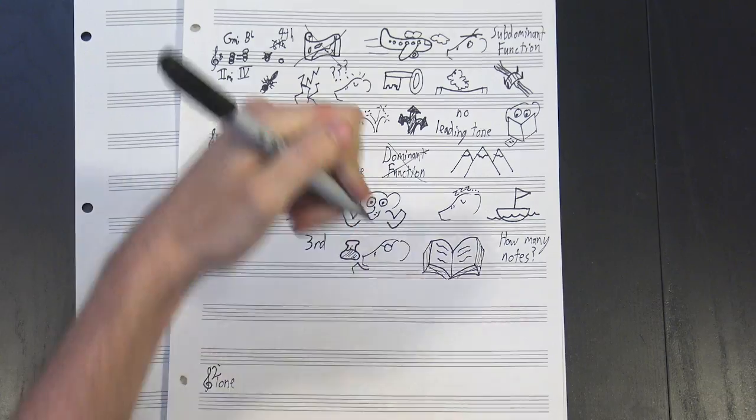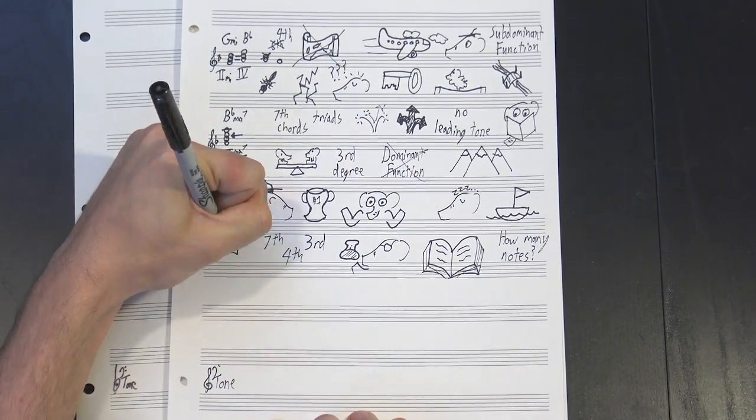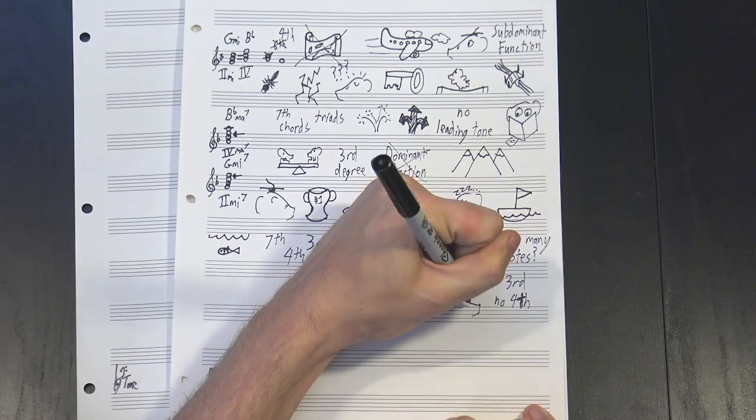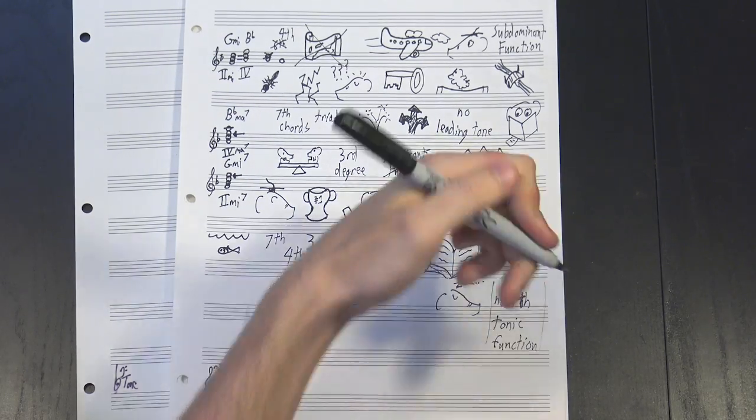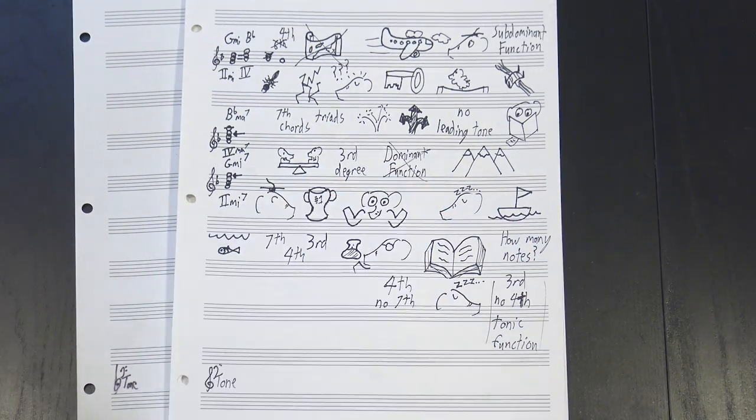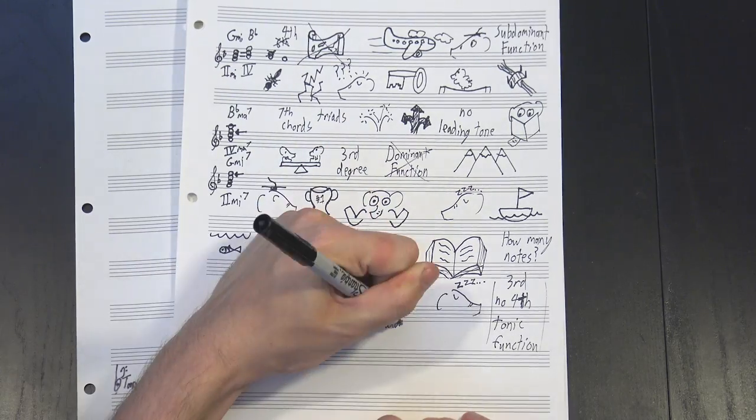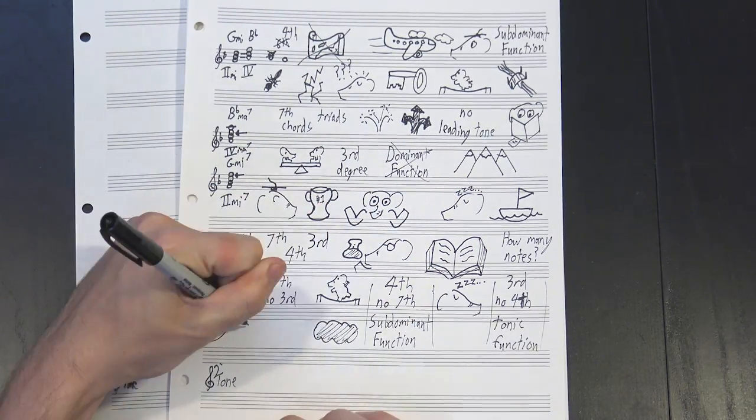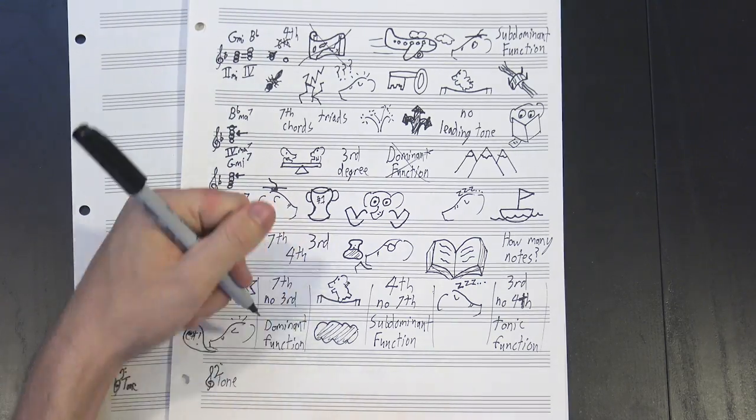You just have to look for the 3rd, 4th, and 7th degrees of the scale. If a chord has the 3rd but not the 4th, it's gonna sound consonant and at rest, and thus tonic. If it's got the 4th but not the 7th, it'll be unstable and ungrounded, making it subdominant. And if it's got the 7th but not the 3rd, it'll be dissonant and directional, making it dominant.